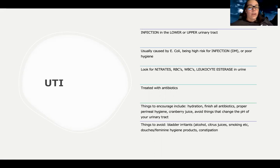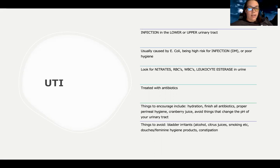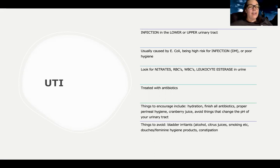Other things to avoid are bladder irritants like alcohol, citrus juices, and smoking, as well as douches and feminine hygiene products. I also want to avoid constipation because anything that affects the bowels can also affect the bladder.